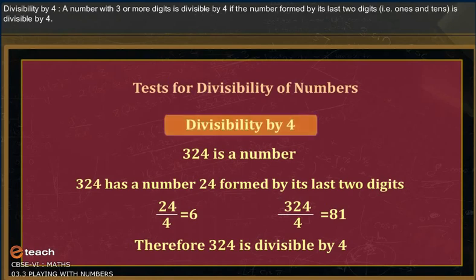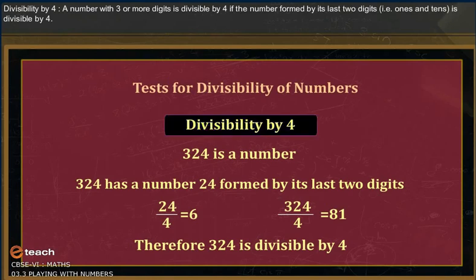Divisibility by four: a number with three or more digits is divisible by four if the number formed by its last two digits (the ones and tens place) is divisible by four.